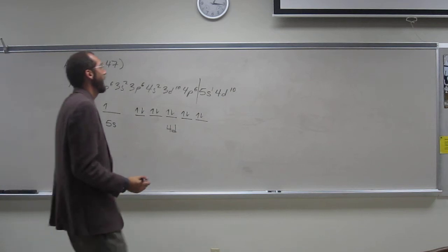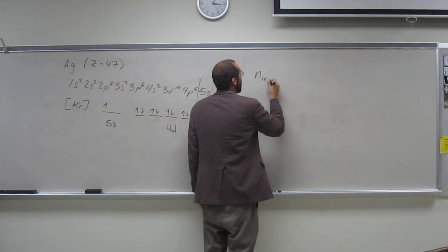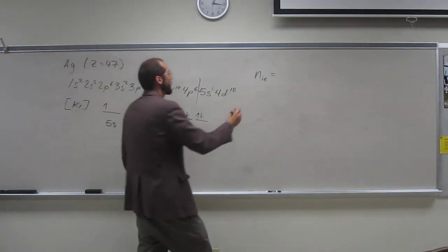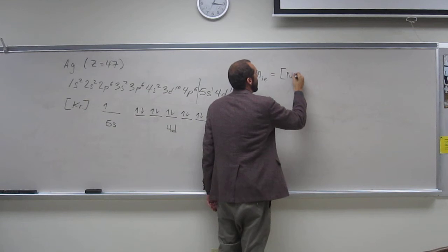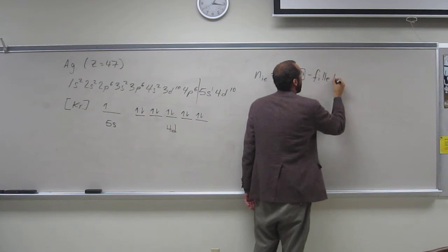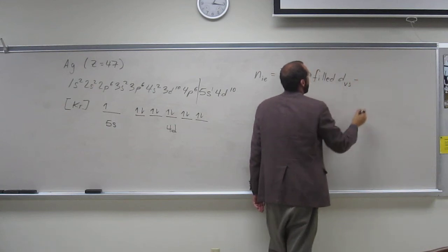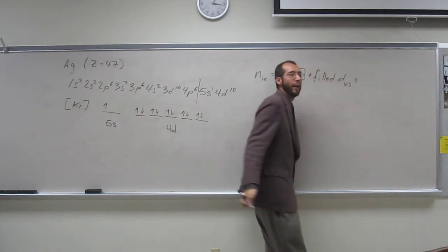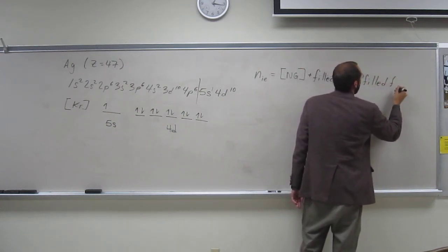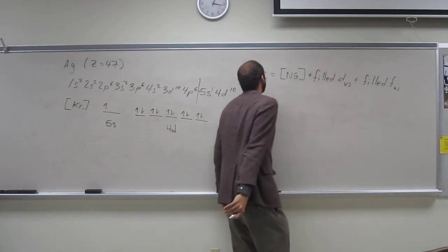So now let's figure out the number of inner electrons. So the number of inner electrons, or the number of core electrons, is going to be the number of electrons in the noble gas, minus the number of filled d orbitals in the valence shell, that's plus, I mean, and plus the number of filled f orbitals in the valence shell.